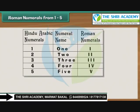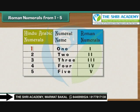Roman numerals from 1 to 5. The Roman numeral corresponding to the Hindu-Arabic numeral 1 is I. As 2 is 1 plus 1, it is written as two I's. Similarly, as 3 is 1 plus 1 plus 1, it is written as three I's.